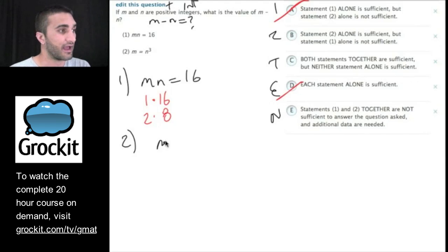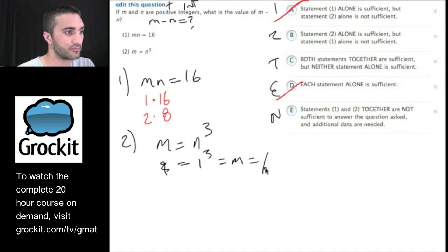Great. Let's look at statement number 2. m equals n cubed. So in this situation, I could have all sorts of values for m and n. Again, we should be able to find all sorts of values that work here. So if n was 1, 1 cubed, well, m would be 1. But if n was 2, we'd have 2 cubed. So m would be 8 in that situation. So again, we're getting different values. I think we can get rid of b.